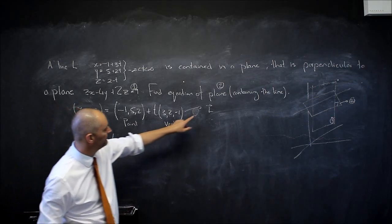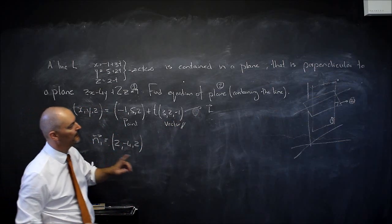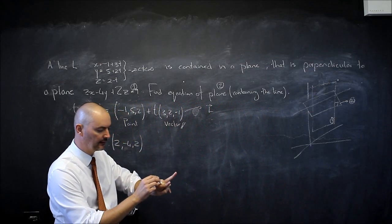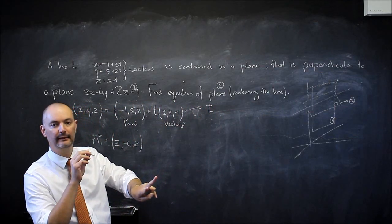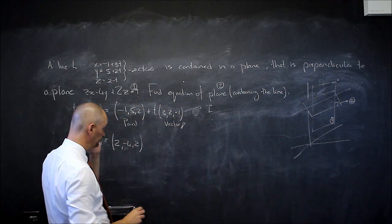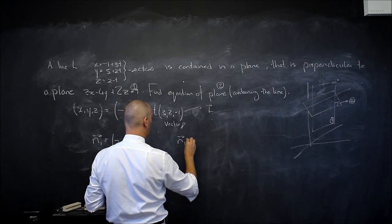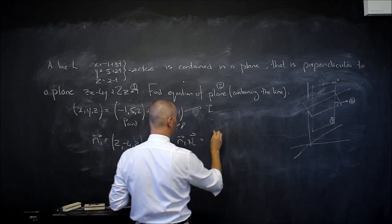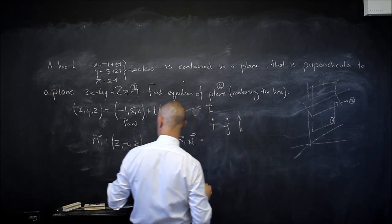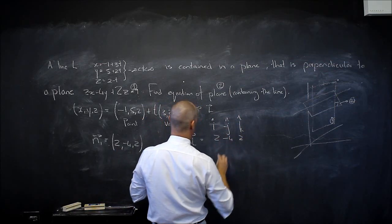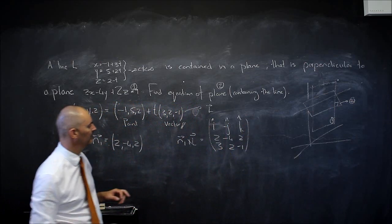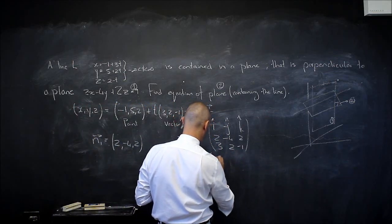So now I have two vectors that are both parallel to plane 2. Let's compute their cross product: n1 cross vector l. Setting up the determinant with i, negative j, k in row 1; n = (2, negative 4, 2) in row 2; and l = (3, 2, negative 1) in row 3. Working that out gives the answer (0, 8, 16). Let's call this vector n — it is now perpendicular to plane 2, i.e., a normal to plane 2.